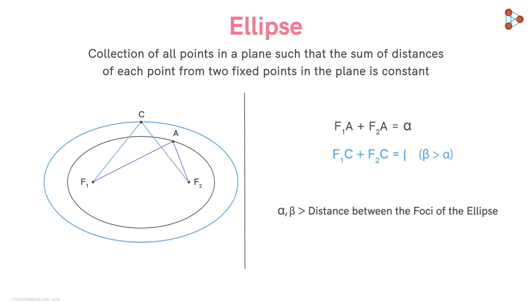If we take the constant to be the number gamma which is less than alpha, then the ellipse will look like this.